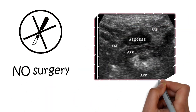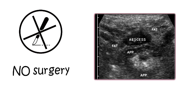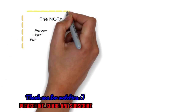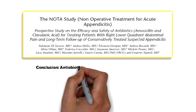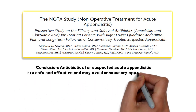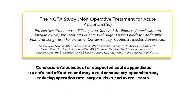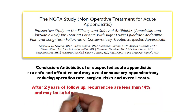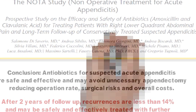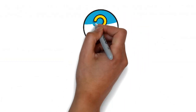Surgery is not always mandatory. Complications such as appendicular lump, abscess, perforation, peritonitis, or recurrent appendicitis favor surgical intervention. However, the NOTA study has shown that conservative management of appendicitis is also effective, stating that antibiotics for uncomplicated appendicitis are safe, effective, and may avoid unnecessary appendectomy, reducing operation rates, surgical risks, and overall cost. After two years of follow-up, recurrence rates were less than 14% and could be safely treated with further antibiotics.